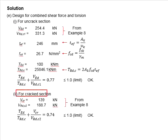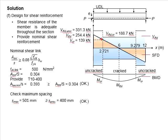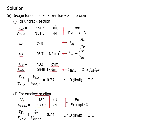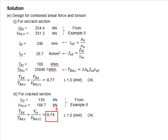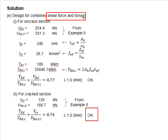We now perform the same check for the cracked section. Here, VED is taken as the critical shear value, and VRDC is determined accordingly for this section. Substituting the relevant values from Example 8, including the shear reinforcement components, the summation equals 0.74, which is again less than 1.0. Therefore, the proposed reinforcement under both shear and torsion is adequate. Good job.